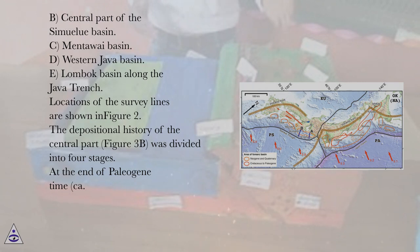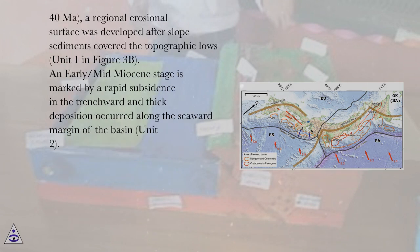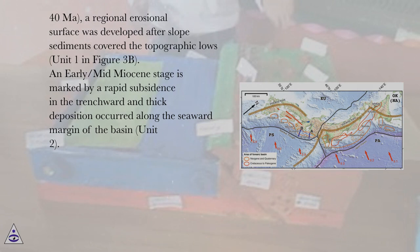The depositional history of the central part, figure 3b, was divided into 4 stages. At the end of Paleogene time, ca. 40 Ma, a regional erosional surface was developed after slope sediments covered the topographic lows, unit 1 in figure 3b. An early-to-mid-Miocene stage is marked by rapid subsidence in the trenchward direction and thick deposition occurred along the seaward margin of the basin, unit 2.